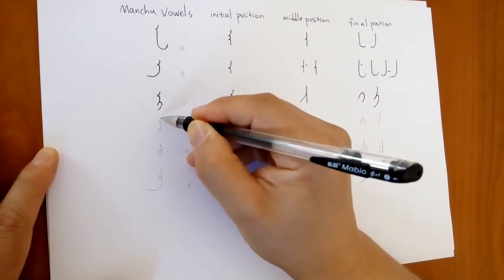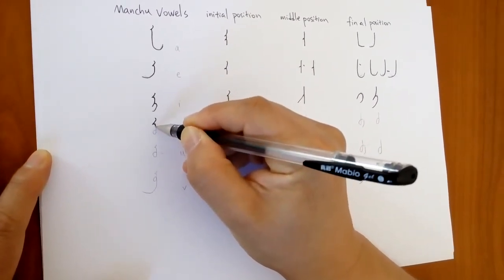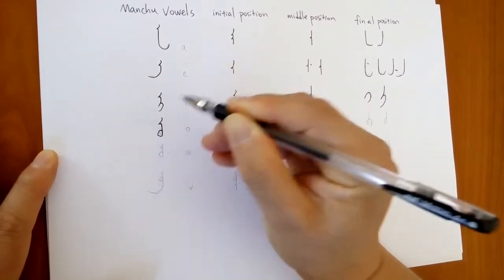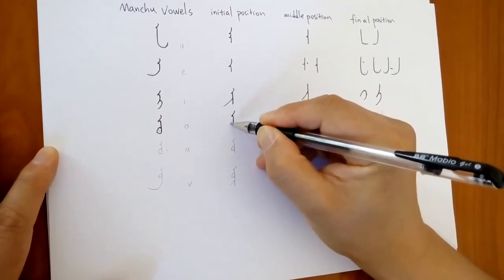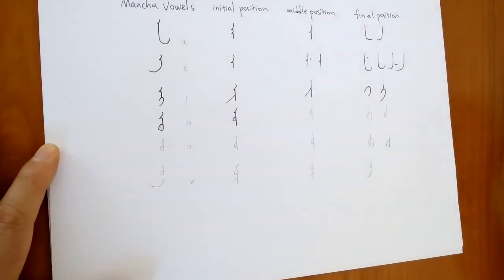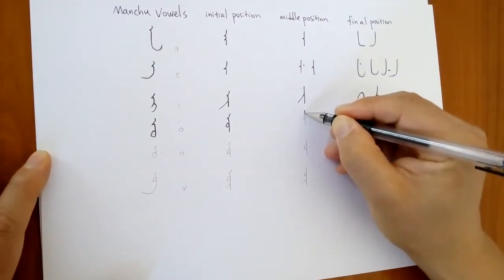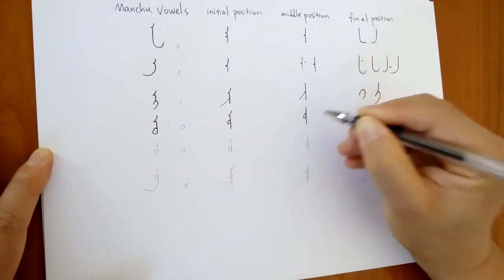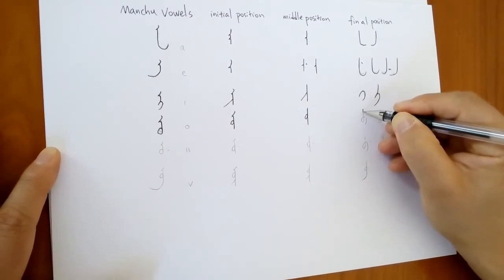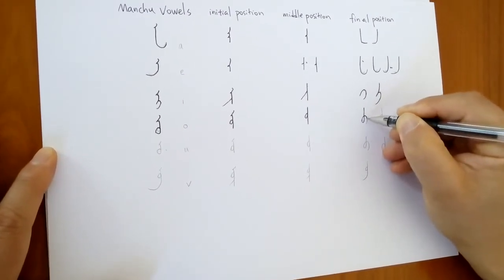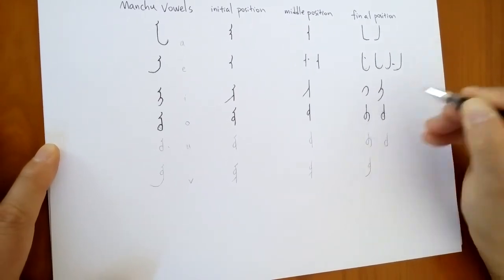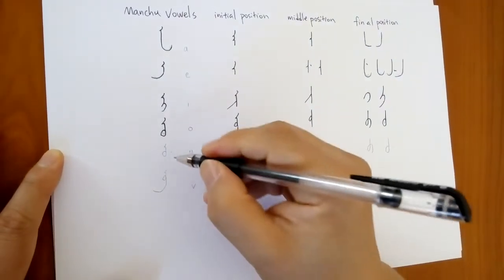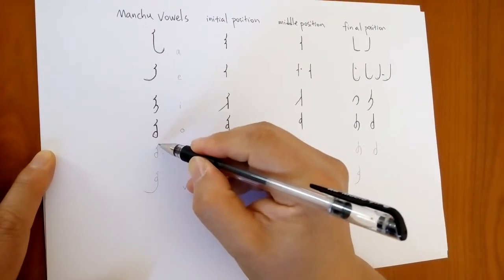Let's look at O. This is O. In the beginning, in the middle, and in the final. O—in the beginning, in the middle, and in the final.